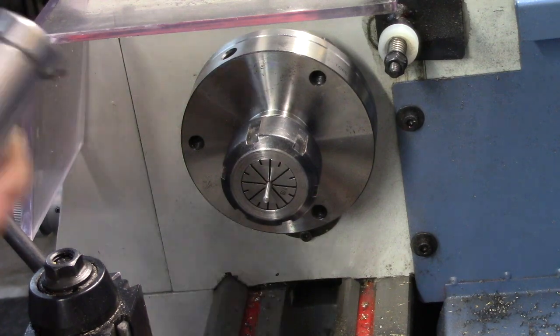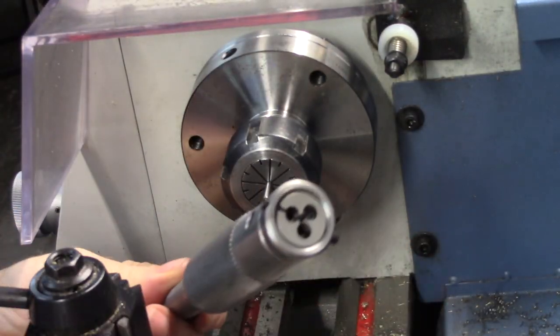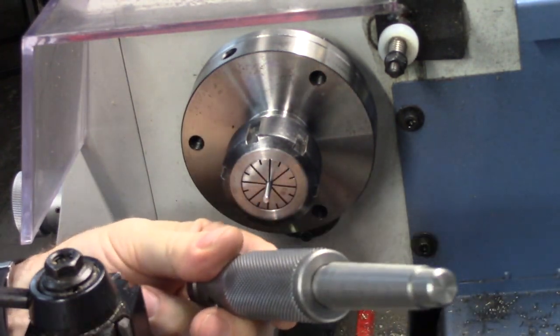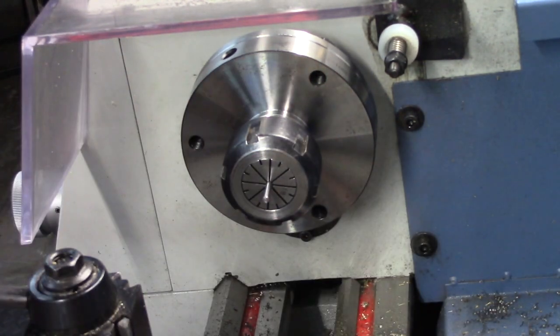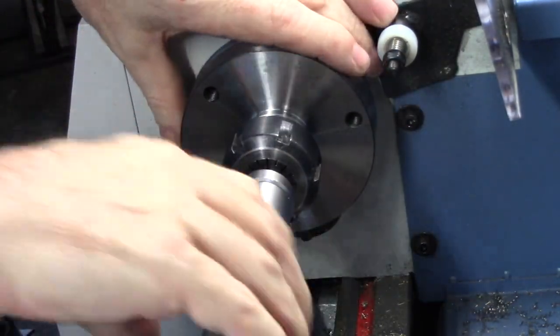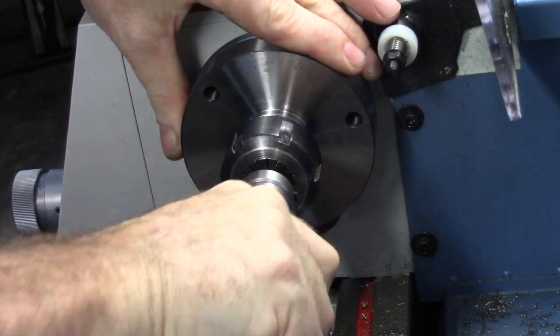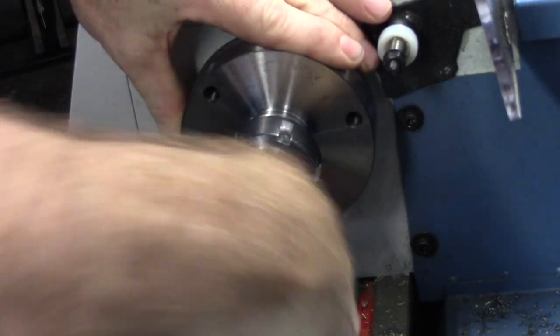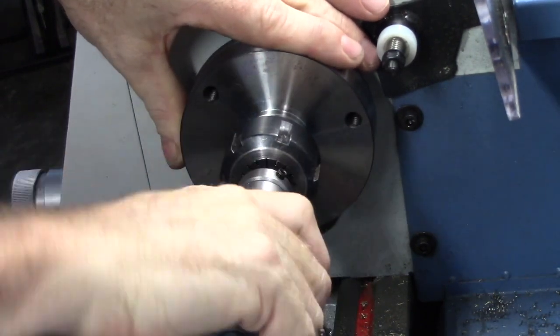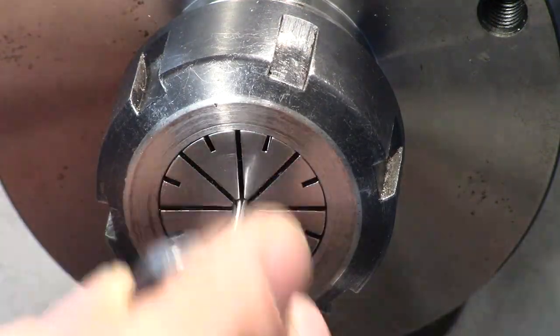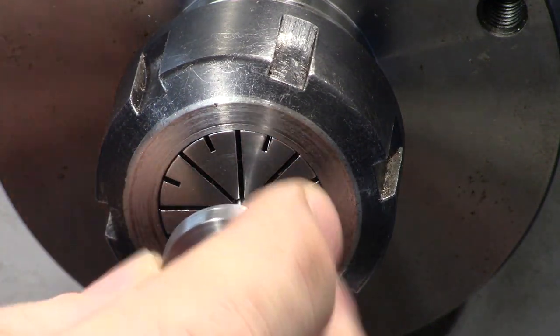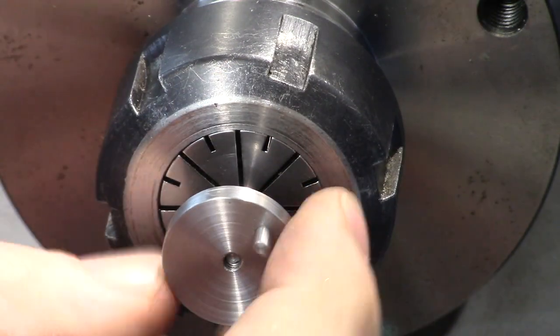The axle is threaded to match the crankshaft plate, using a threading die and sliding holder secured in the tailstock of the lathe. The test fit on a crankshaft plate shows the thread is not quite deep enough.